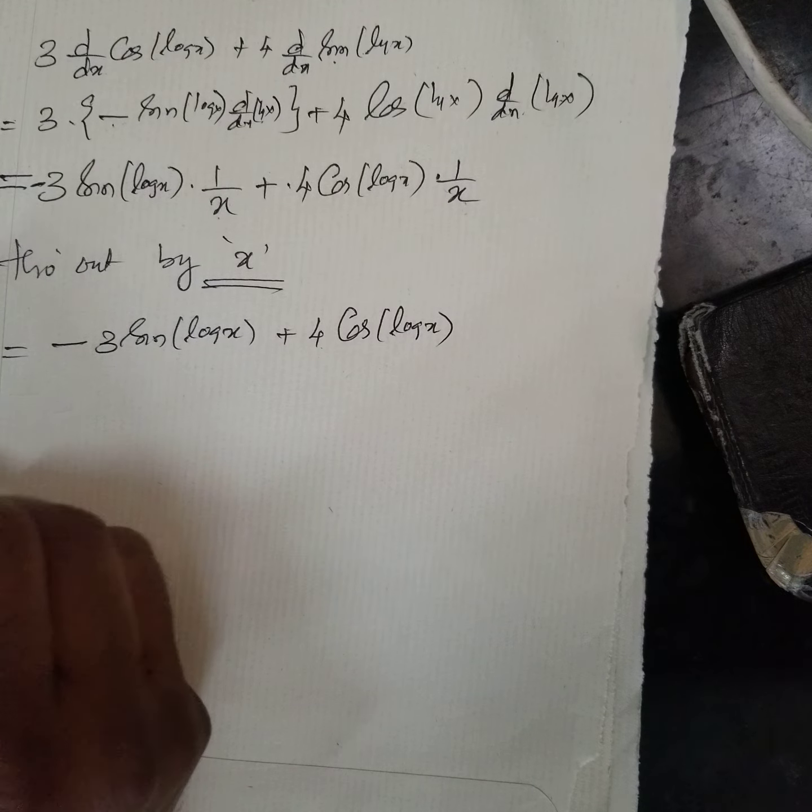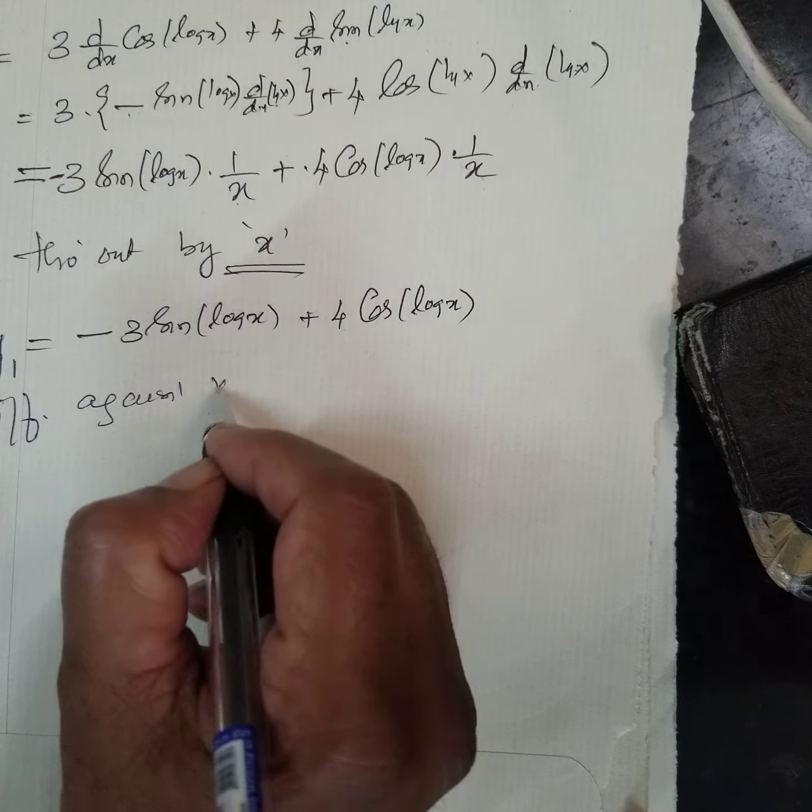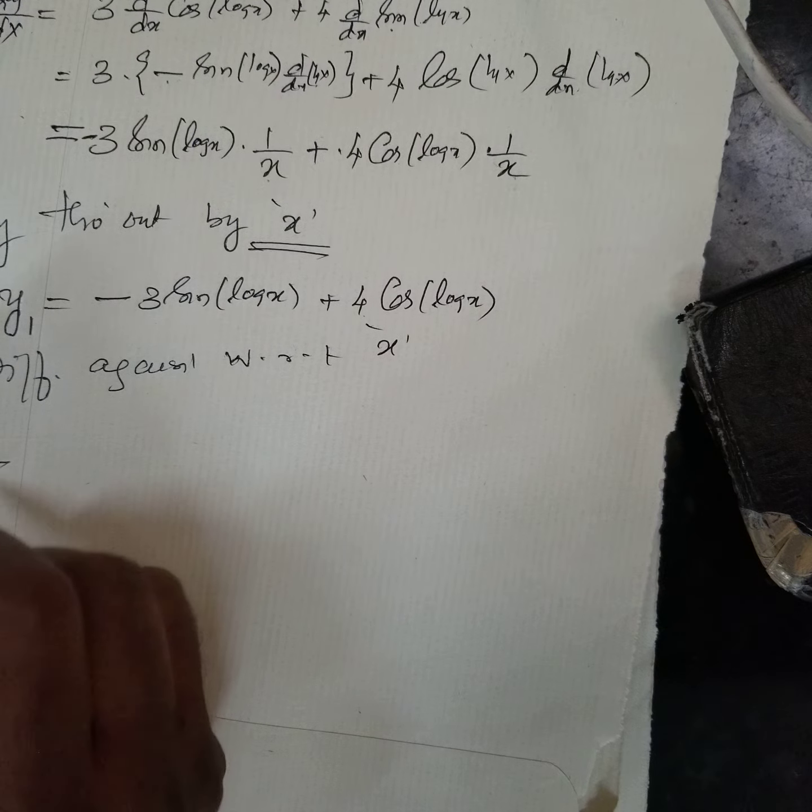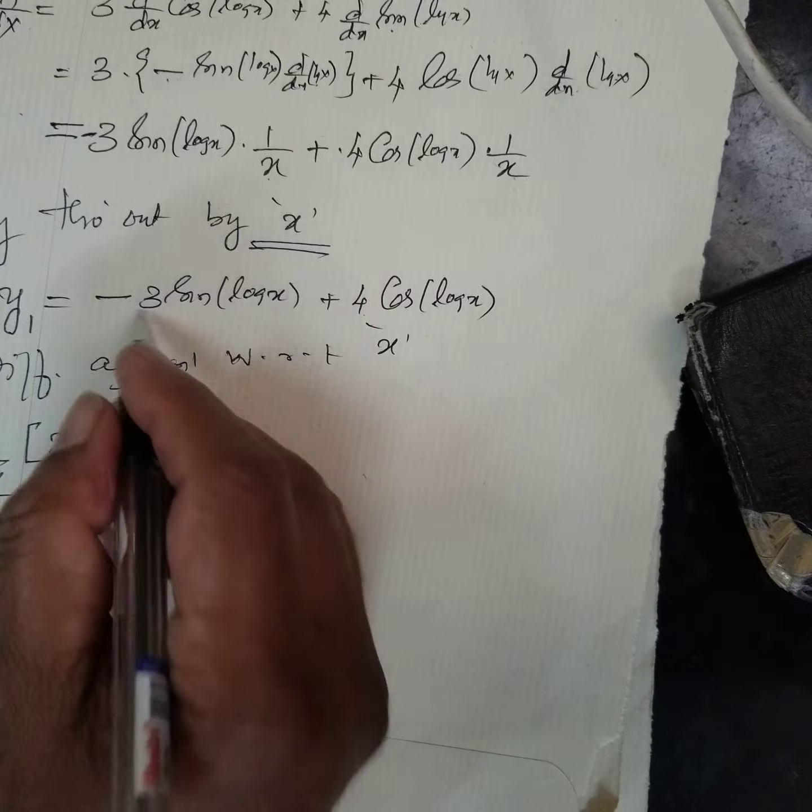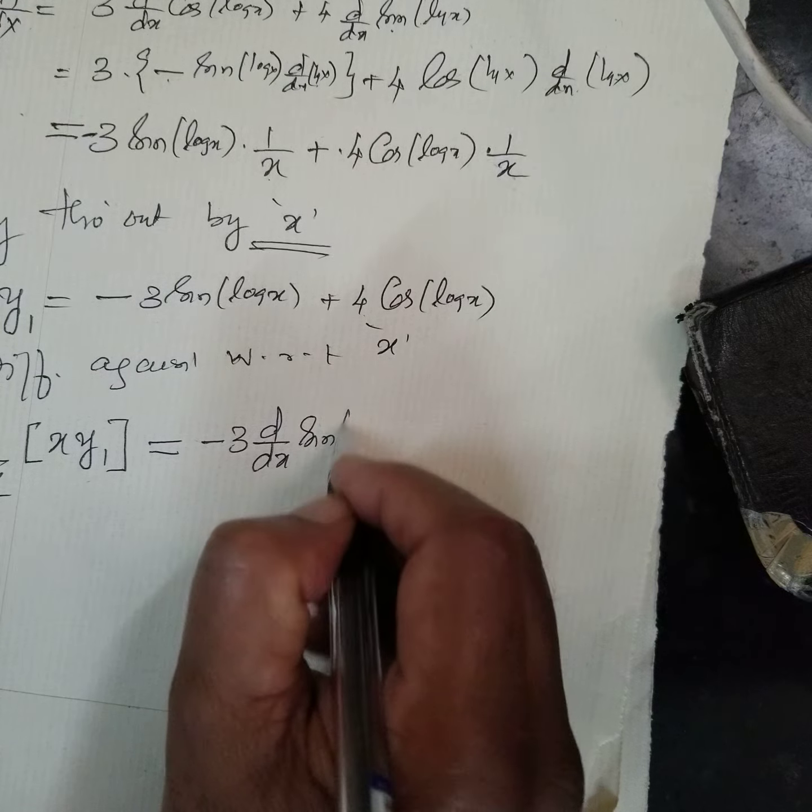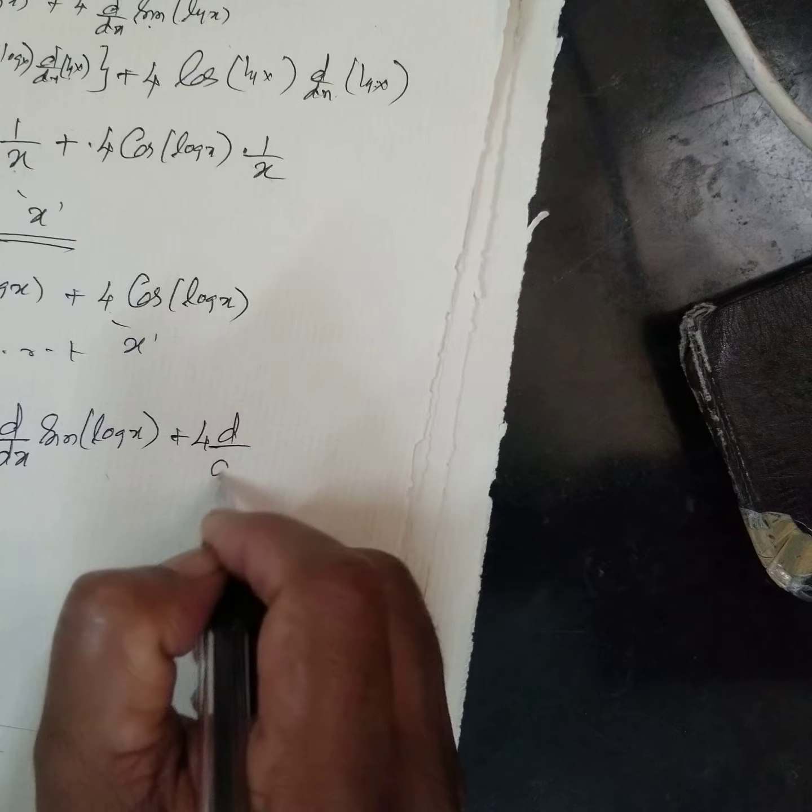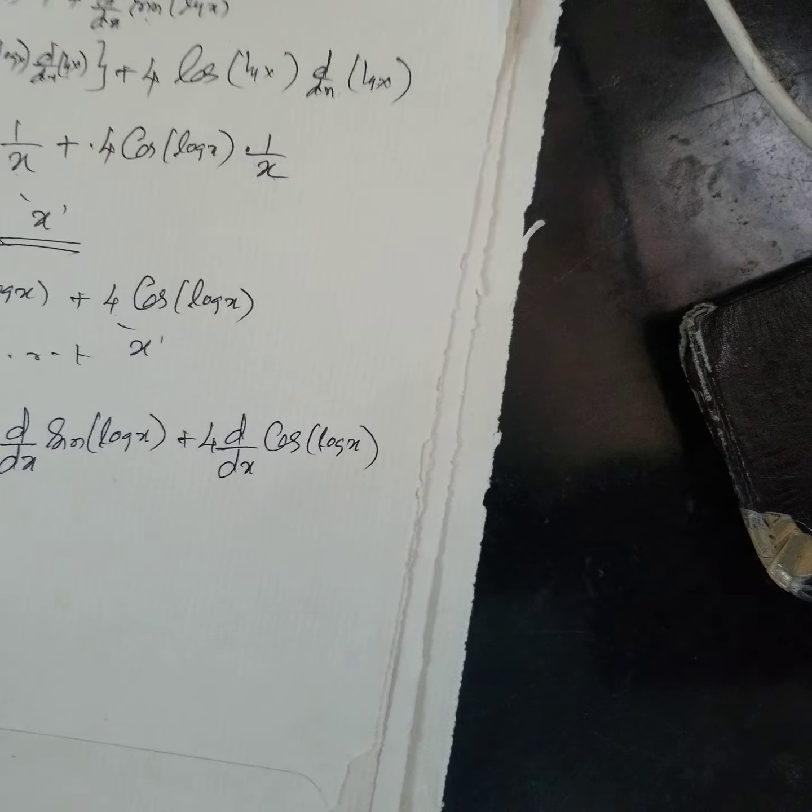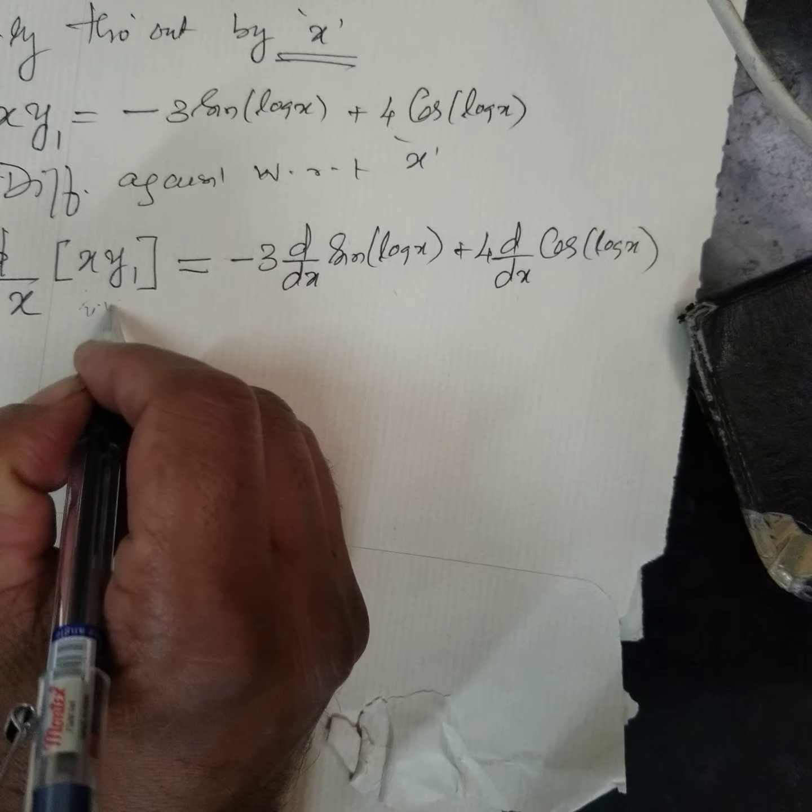Now, differentiate again, differentiate again, with respect to x. Now, I am doing this one. Here is very important, xy1 is equal to minus 3 d by dx of sin log x, plus 4 d by dx of cos log x. Here, this is u into v. This is u into v.